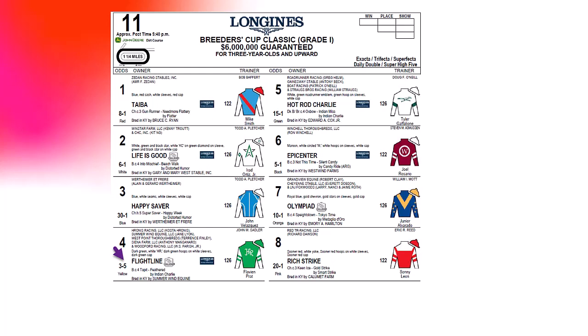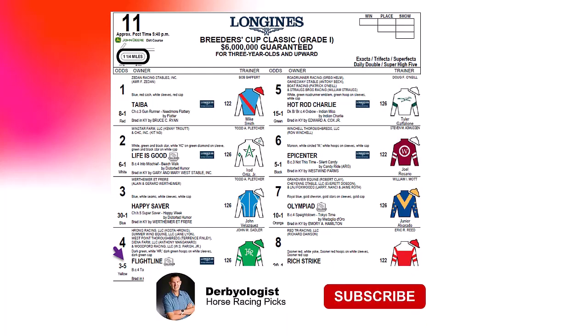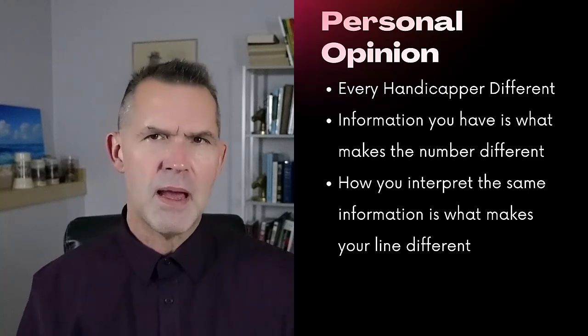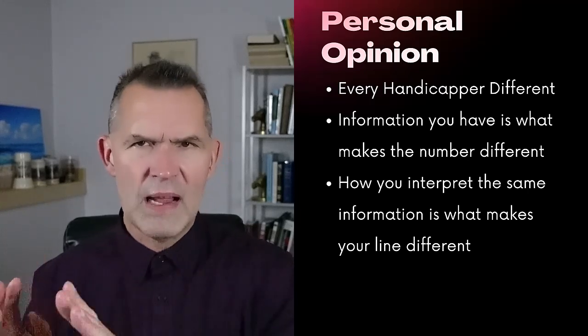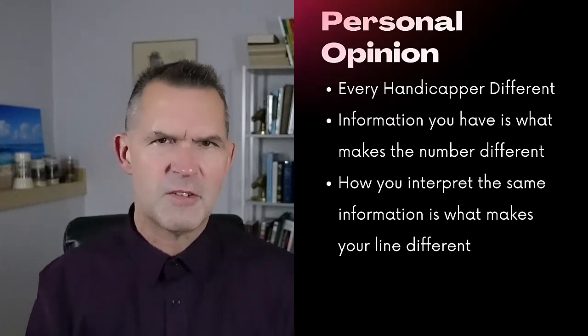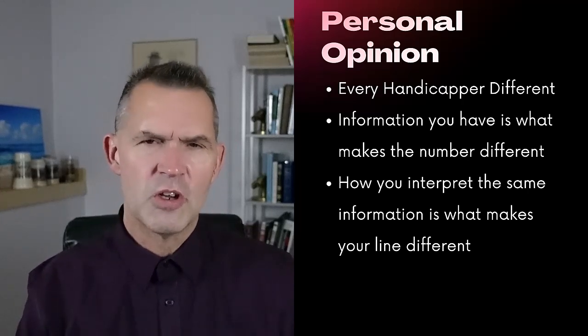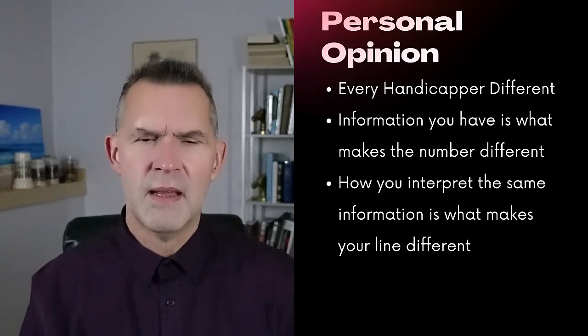A lot of my videos going forward will talk about a betting line and a value line, so you can determine your own betting line for each race you handicap. In this race, Flightline was 3 to 5, Life is Good was 6 to 1, and Olympiad was 10 to 1. Every handicapper has a different morning line or value line, and the information you have — replays, workouts, speed figures, pace, trainer stats, jockey stats — is what makes that line different from someone else's.